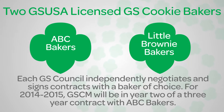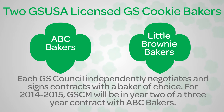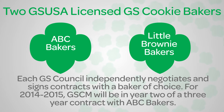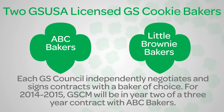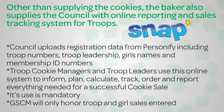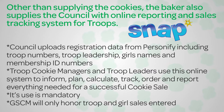There are two GSUSA licensed Girl Scout cookie bakers: ABC Bakers and Little Brownie Bakers. Each Girl Scout Council independently negotiates and signs contracts with the baker of choice. For 2014-15, GSCM will be in year two of a three-year contract with ABC Bakers. Other than supplying the cookies, the baker also supplies the council with online reporting and sales tracking systems for troops.